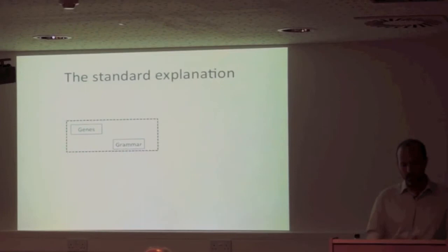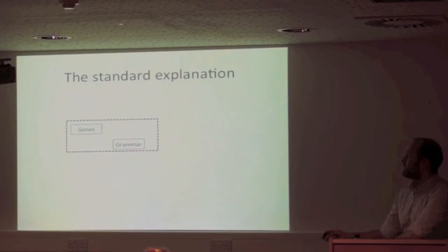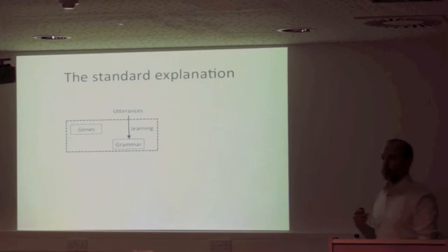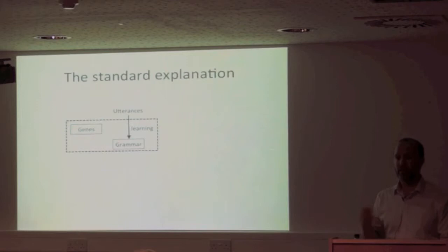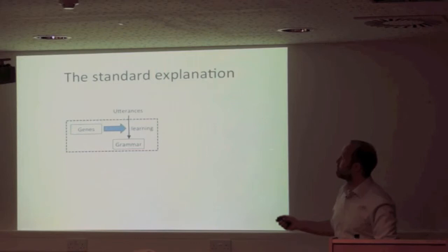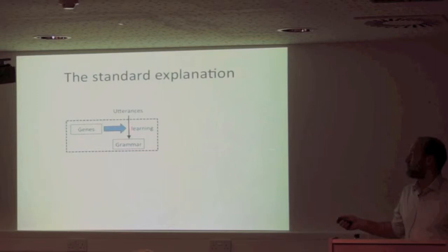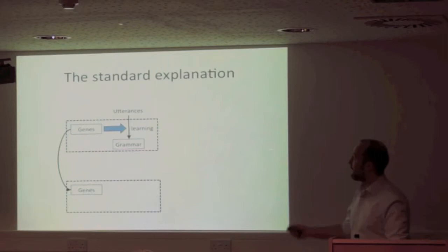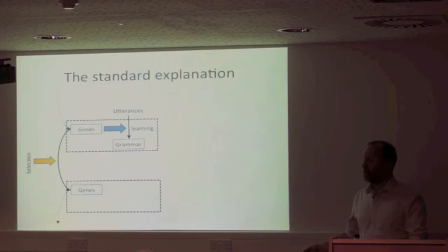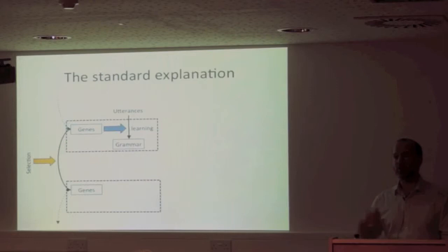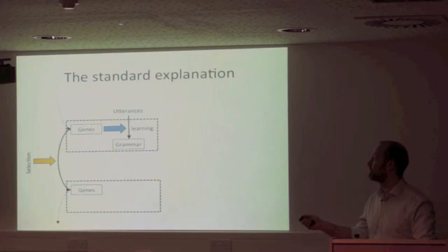Here's one way to think about the standard explanation. Individuals have genes that end up with a grammar — some mental knowledge of how their language works. Learning is involved in building that grammar, influenced by other people around you. But the idea is that genes constrain this learning process, pushing you towards learning certain kinds of grammars. You then pass on your genes to offspring. The genes determine what kinds of mental grammar you can build, and selection acts on this transmission — some languages are better than others, so there's selection for genes that build expressive grammars.